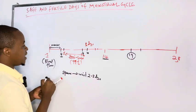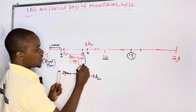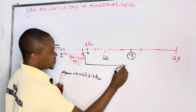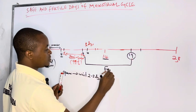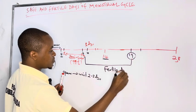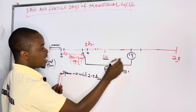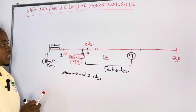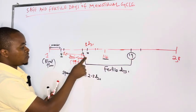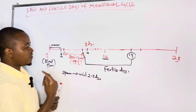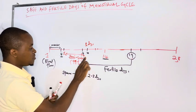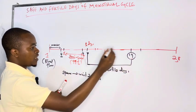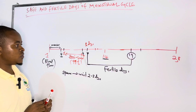Then between day 9 and day 19, these are fertile days. These 10 days between 9 and 19, they are fertile days. From 10th to 19th, they are fertile days.